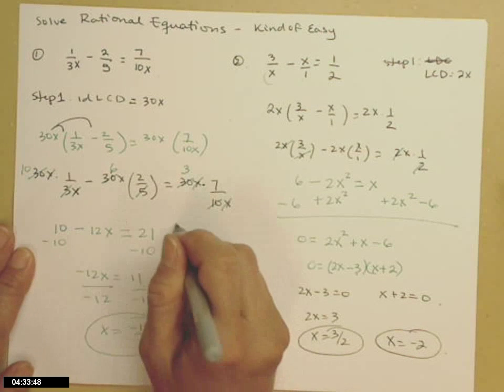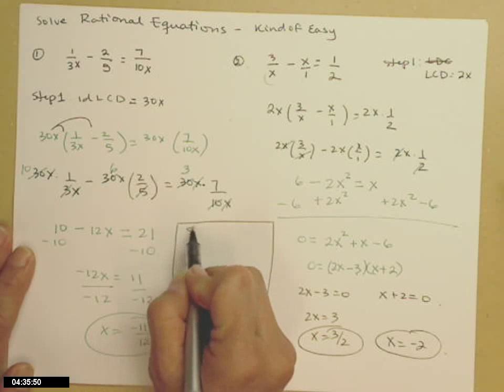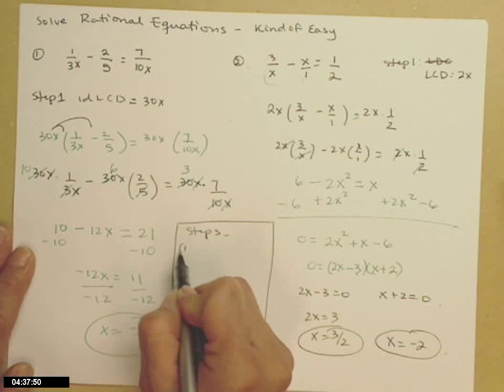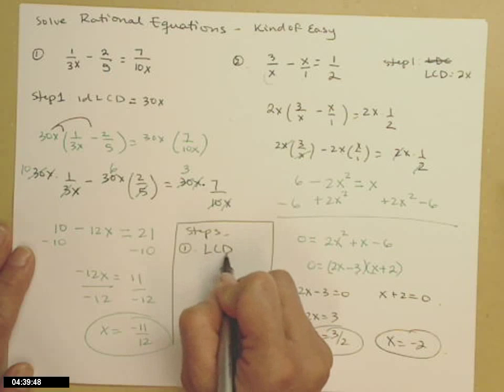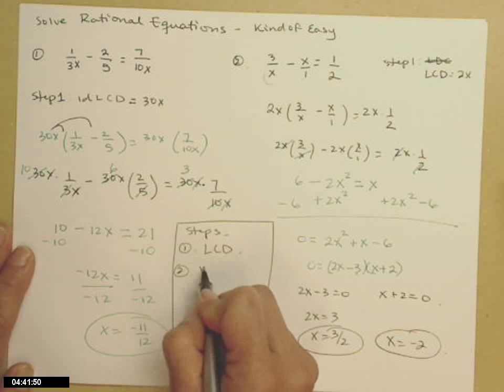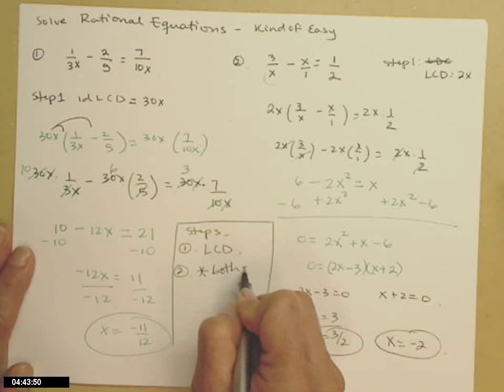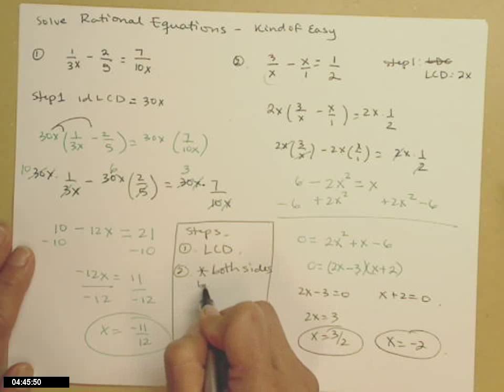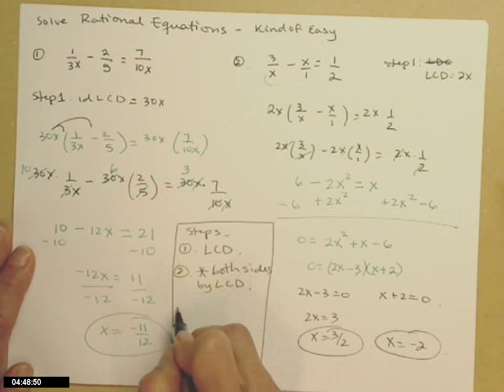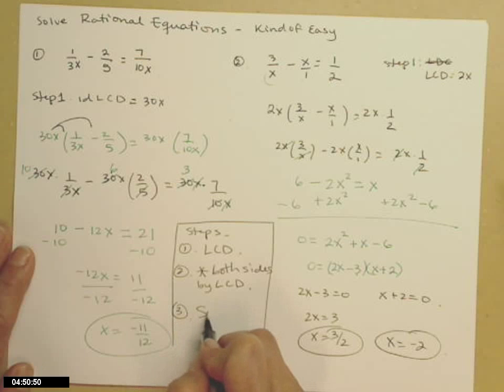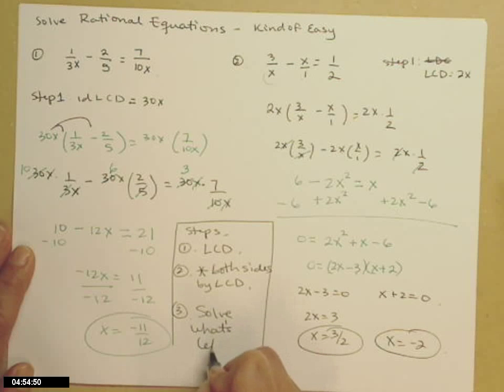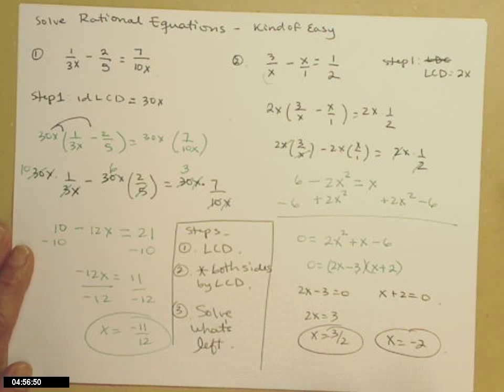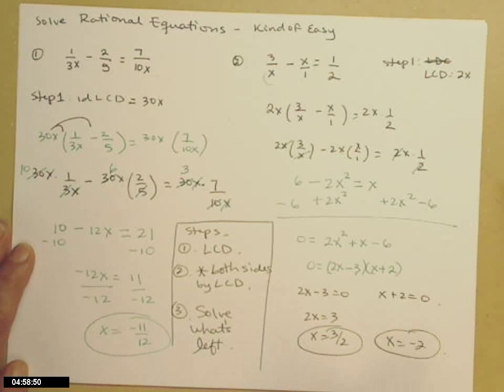So again, steps 1, what's the LCD? 2, multiply both sides by the LCD. This cancels all of your denominators. Step 3, solve what's left. And you'll have to be careful because what's left will either be linear or quadratic. And what you do next depends on which one you get. Good luck!